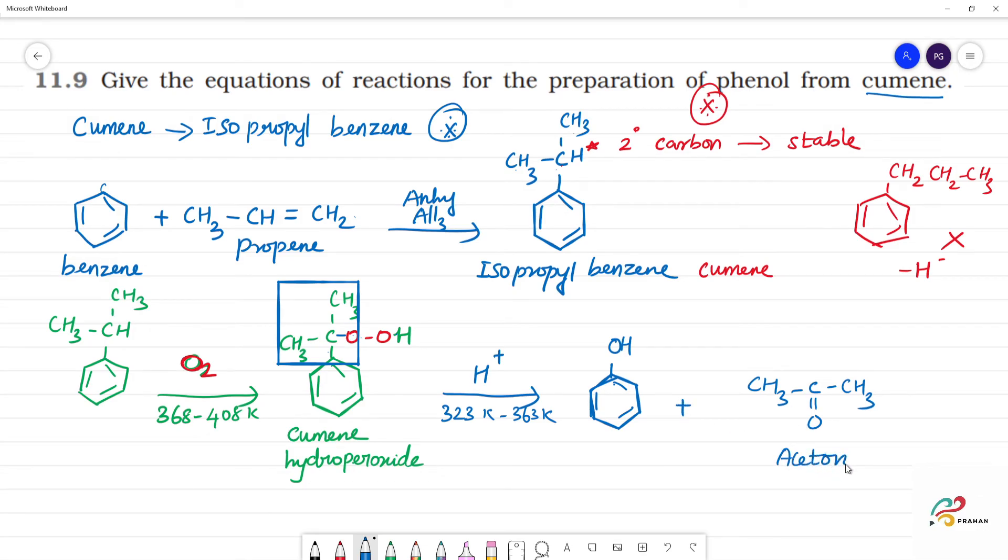So this is acetone, obtained from cumene. And phenol is also obtained from cumene. So cumene hydroperoxide is an important intermediate for competitive exams.